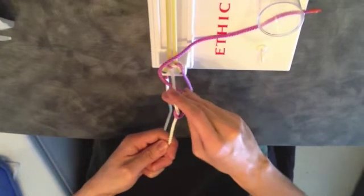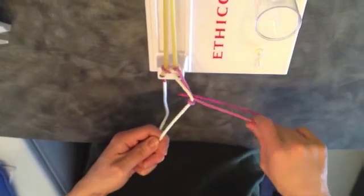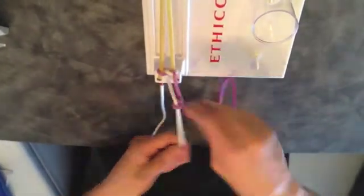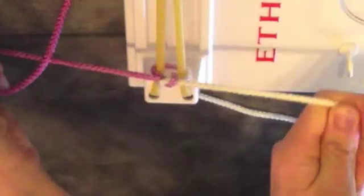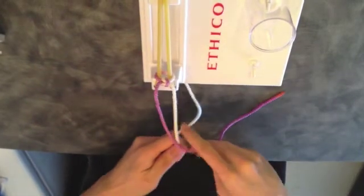Use your right middle finger to push the strand through the loop. Cross your right hand over your left hand to secure the second throw. Repeat the process until you have a secure square knot.